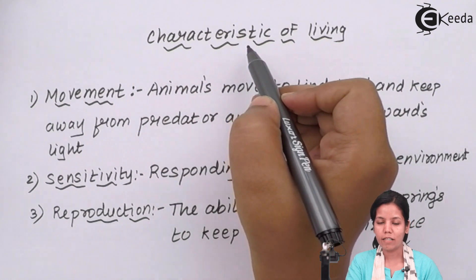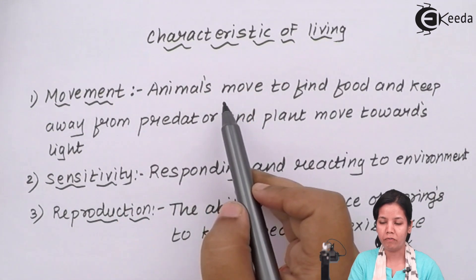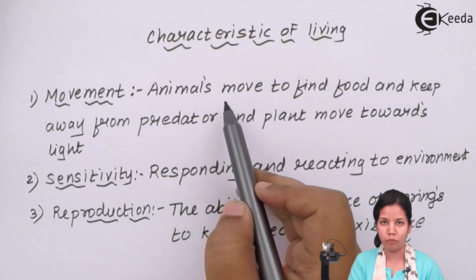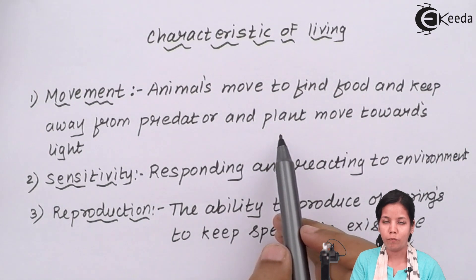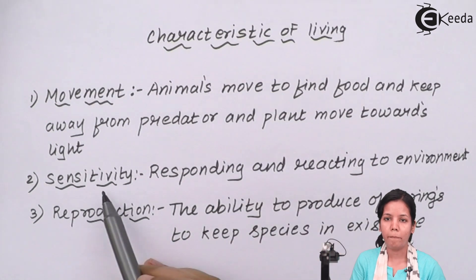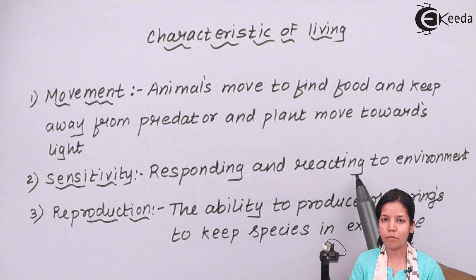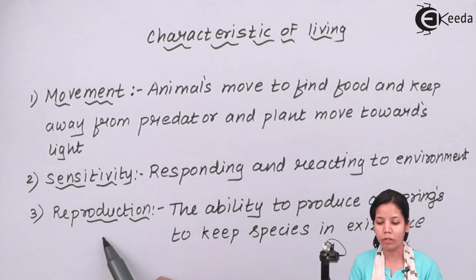The characteristics of living organisms include movement — animals move from place to place in search of food and to prevent themselves from predators. Plants move towards light, which is phototropism; photo means light. Sensitivity: plants respond to the environment. Reproduction: every living organism has the ability to reproduce.